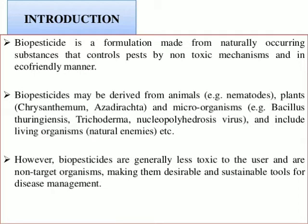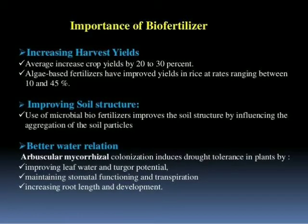We can also use the bacterium Bacillus thuringiensis. In biotechnology, you have studied the cry gene — by introducing it into plants through gene transfer, we can make plants insect-resistant. So Bacillus thuringiensis is one microorganism that can be used as a bio-insecticide. There are also fungi like Trichoderma that help in the control of pests.